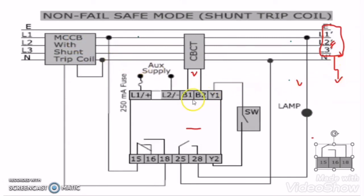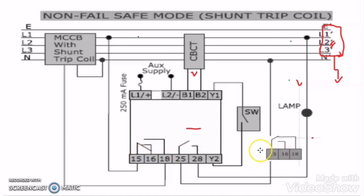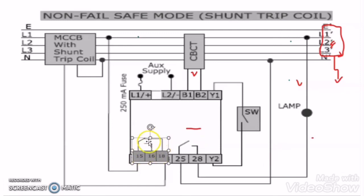When there was no earth fault, power was coming to terminal 18 but not reaching because 15 and 18 was a NO contact. But as there is an earth fault in the system, 15 and 18 become NC and the power flows from 15 to 18, completing the circuit for the shunt trip of the MCCB. The shunt trip gets activated and trips the MCCB. I hope you clearly understand what is ELR, its printed details and different functions, the working principle of CBCT, how to do the wiring for CBCT and ELR to protect a connected load, and how CBCT and ELR together protect any connected load. If you really liked this video, please give thumbs up and subscribe to my channel. Take care, keep learning, bye bye.